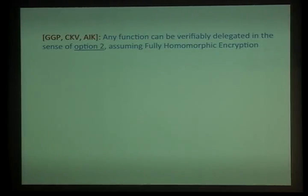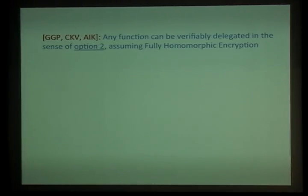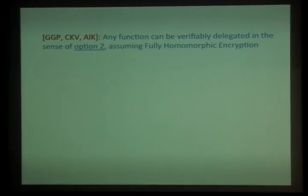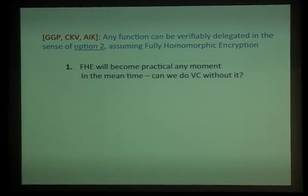Last year, there were several breakthrough results in the area, by Gennaro, Gentry, and Parno; Chung and Kalai and Vatan; and Applebaum, Ishai, and Kushilevitz. All of them show that any function can be outsourced in the manner described in option two: via an initial setup phase where the data is processed and the processed data uploaded to the server, after which computations can be performed without work linear in the data description. All three solutions are based on fully homomorphic encryption, which at the moment is not quite practical, especially on large data sets. So the question is: can we do anything without it?